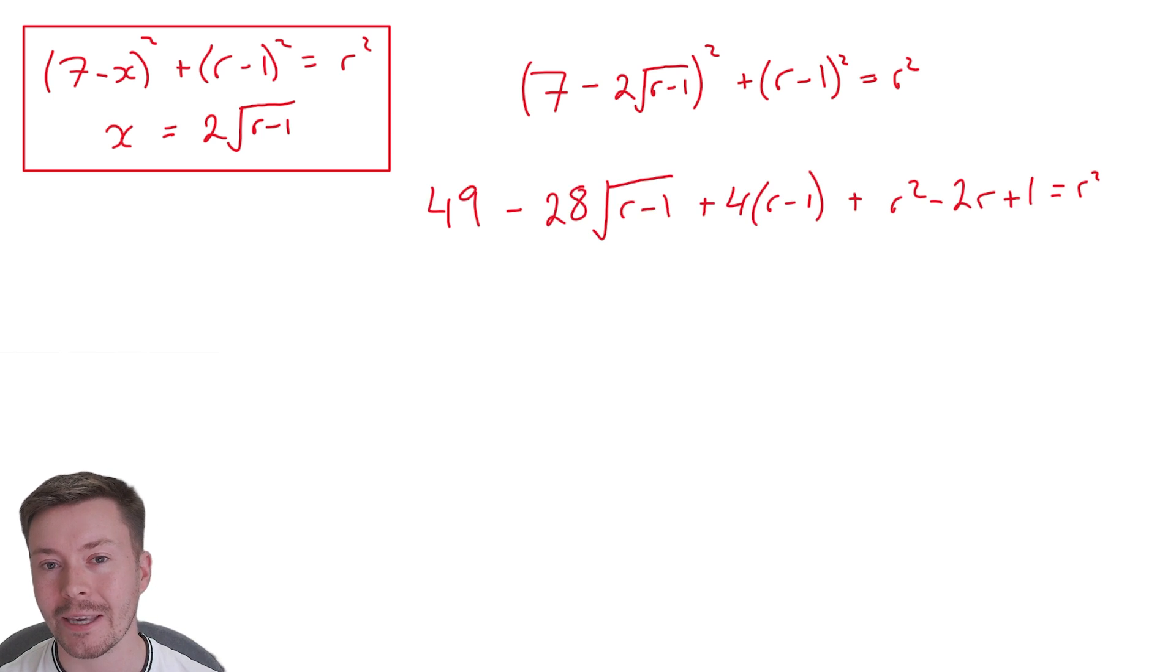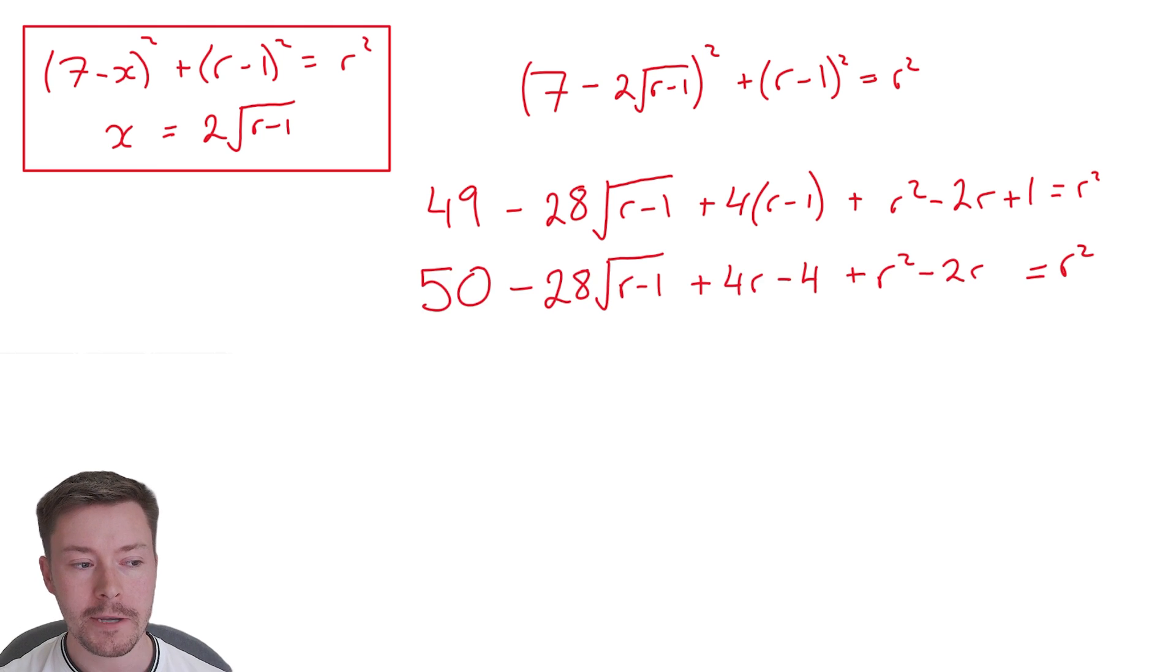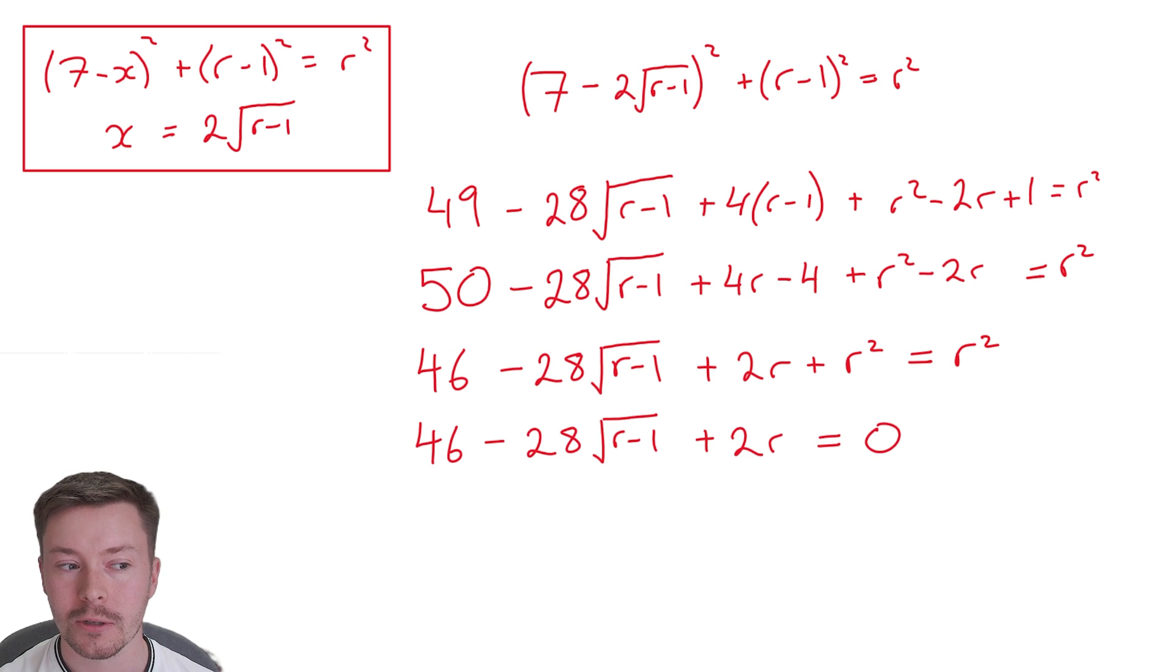So I expand the brackets and we get this. Then we need to collect the like terms. So I'm going to add the 1 on together and I'm going to expand the bracket with the 4 brackets r minus 1. Okay, we've got this. Because of expanding that bracket, I need to collect the like terms again. And now I've collected my like terms as much as I can. I'm going to cancel the r squareds out. Okay, take r squared away from both sides.